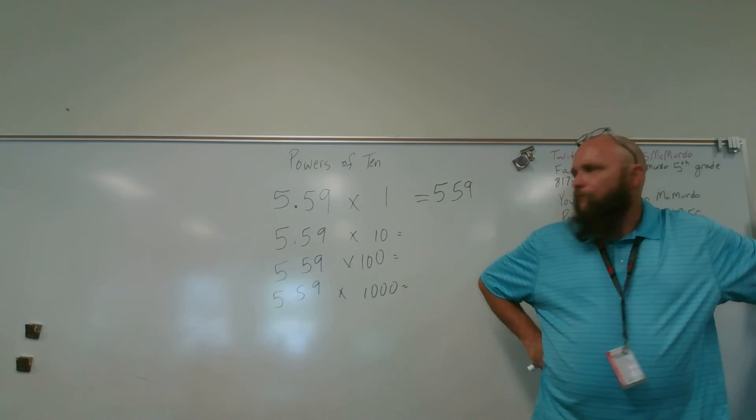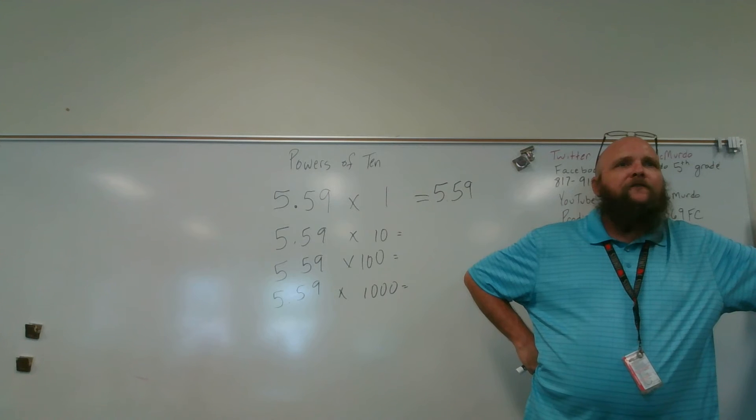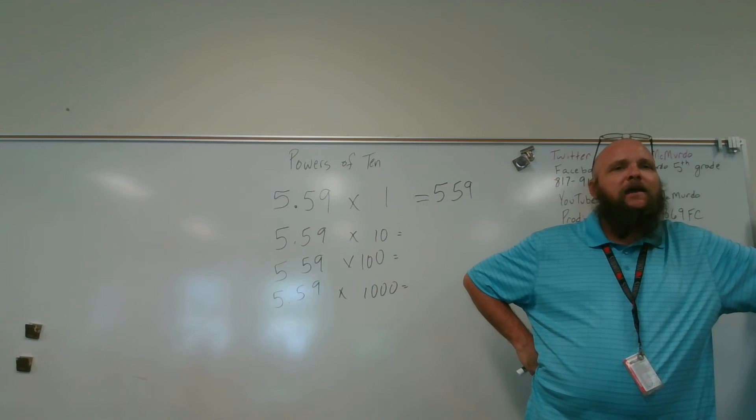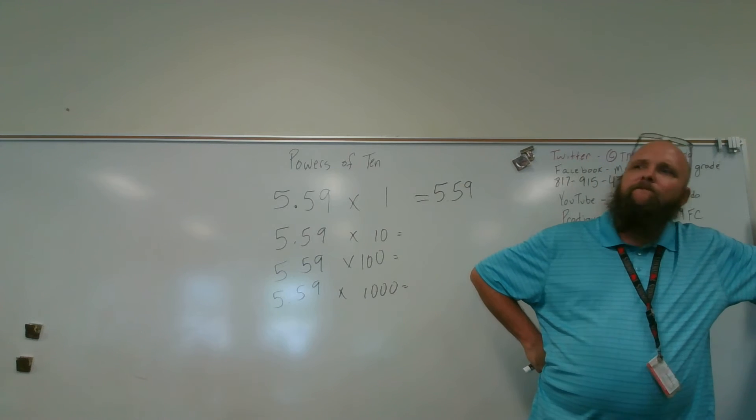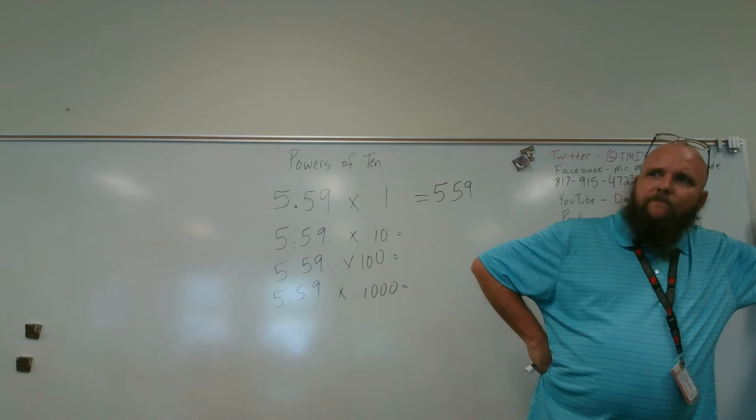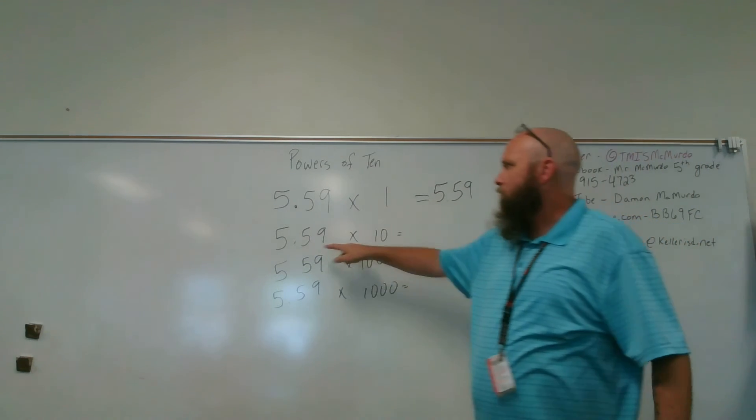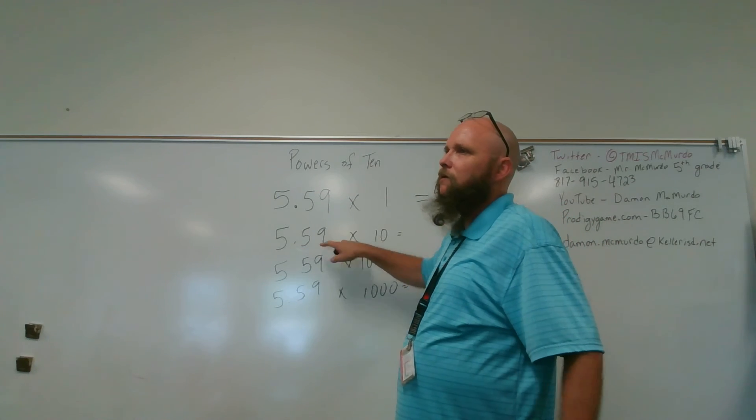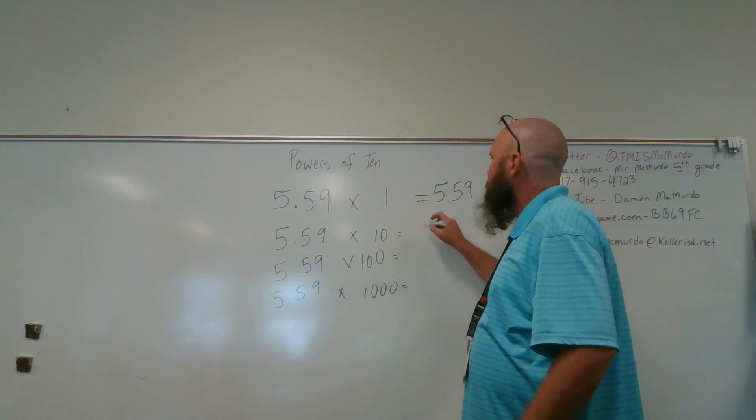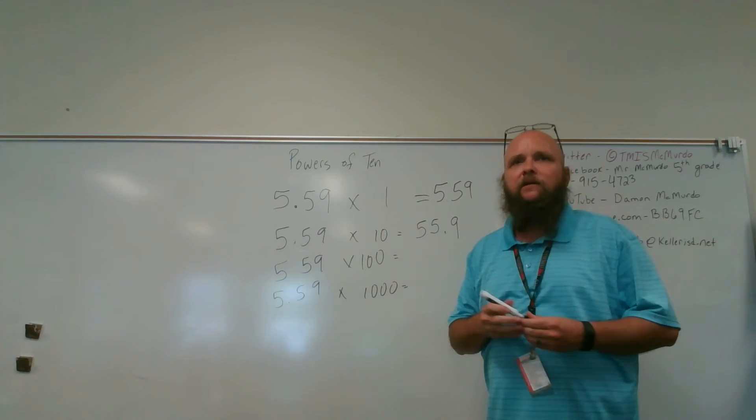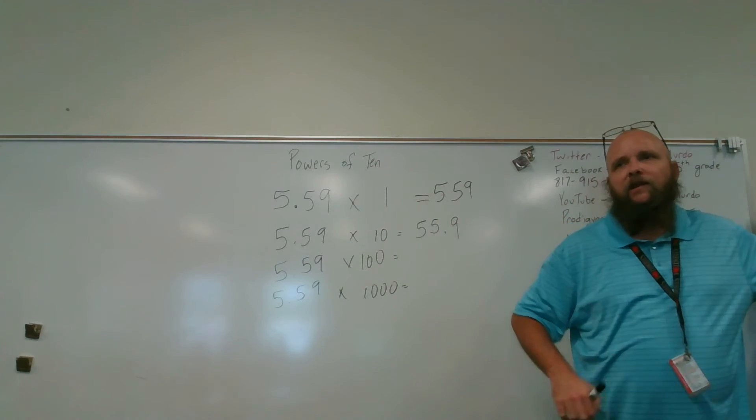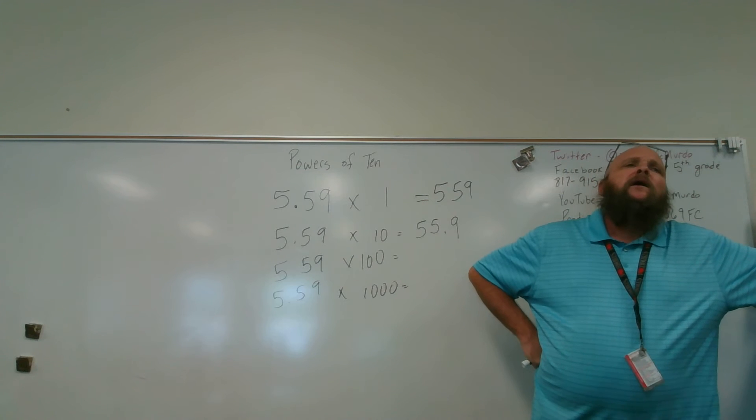Courtney, I want 5.59 multiplied by 1 equals 5.59. See, JJ, I'm only giving her the hard ones. When we get to the easy ones, I know you'll hook me up. You'll hook me up. Miracle, 5.59 times 10. We're moving my decimal point one place to the right. Good. 55.9.